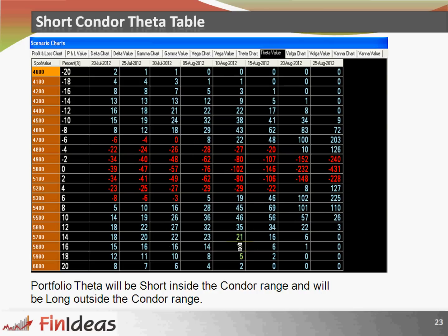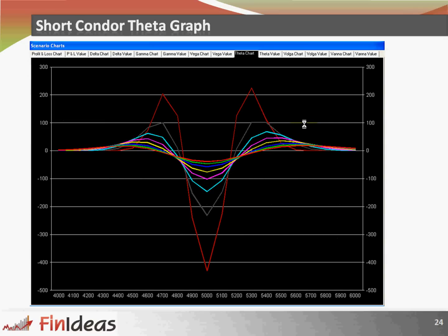Theta table for short condor: portfolio theta will be short inside the condor range and long outside the condor range. Contrary to gamma and vega, theta is negative within the condor range, and as soon as we break the condor range upside or downside it will be a positive figure. The theta graph confirms we are having negative theta when trading within the condor range and positive theta outside the condor range.